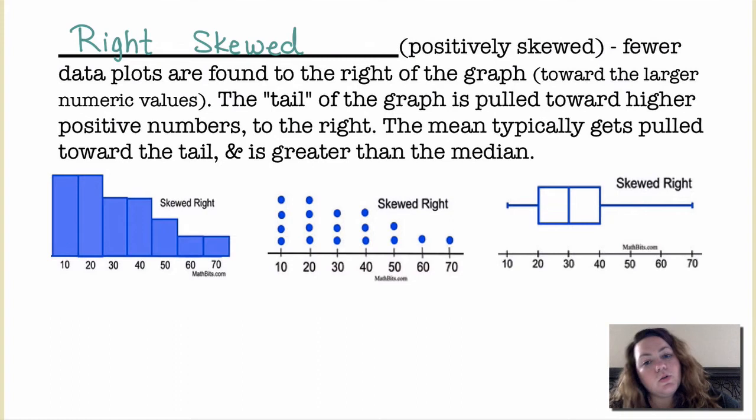The mean typically gets pulled towards the tail and is greater than the median. So the mean gets pulled towards the tail, the median is just going to stay like the middle value. But if the tail of the distribution is on the right side, then it's skewed right. And that's what the shapes would look like as a histogram, dot plot, and somewhat how it would look as a box plot.